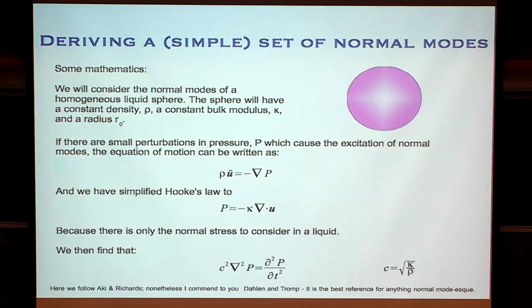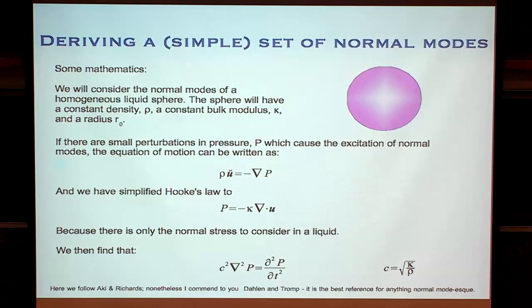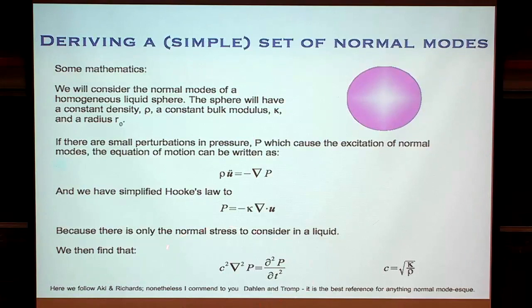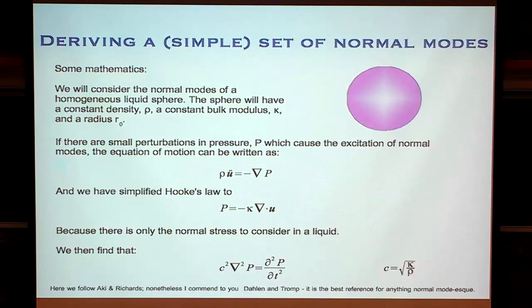If we take our equation of motion and our Hooke's law and cram one into the other, we get something that looks like a wave equation. We've got some speed squared — kappa over rho, the modulus over the density — a second derivative of pressure, and a second derivative with respect to time. The planet is spherical, so I rewrite the spatial term in spherical polar coordinates. It looks ugly, but that's just saying I don't want to be in an x, y, z system because the Earth is round.